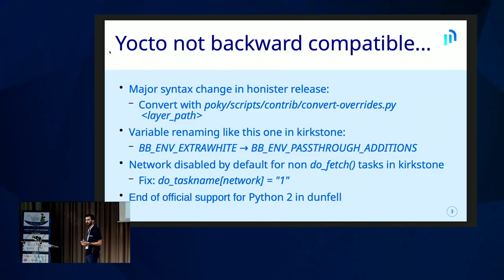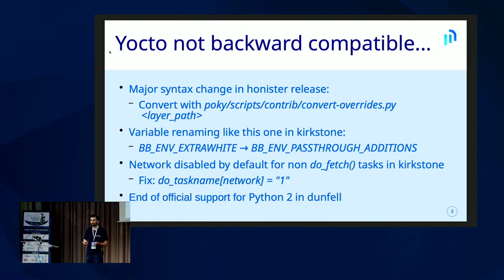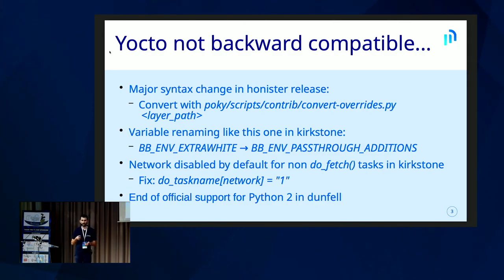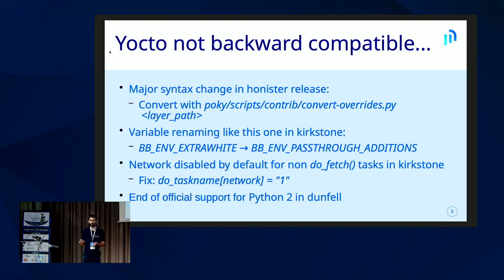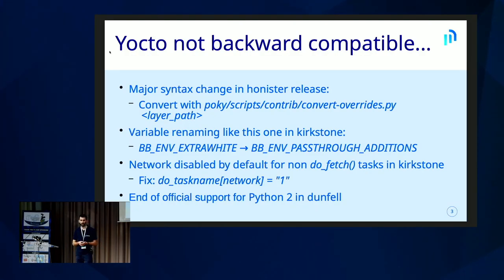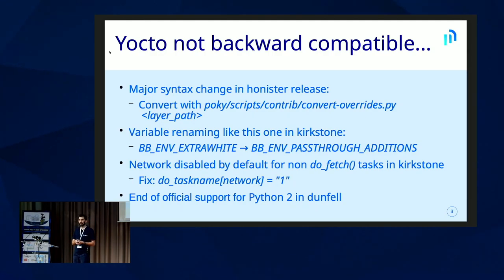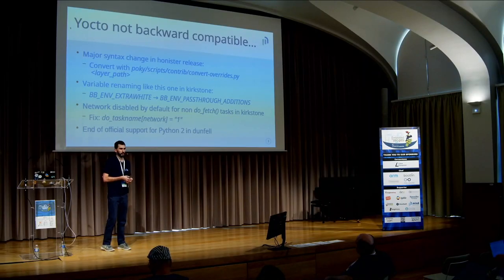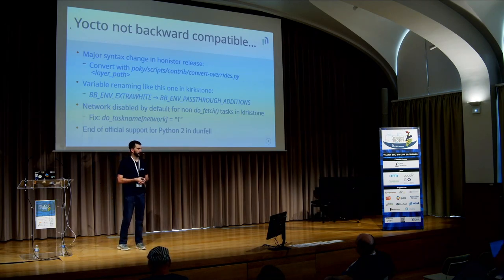The first thing you will discover is that Yocto is not backward compatible at all. Each release introduces a lot of regressions and changes that you have to fix in your layer. For example, the Honister release changed completely the override mechanism syntax from underscore to colon character. Thankfully they provided a script to help with this migration, so reading the release notes is important. But the script is not perfect — you have to review the result because there are false positives and missing pieces.